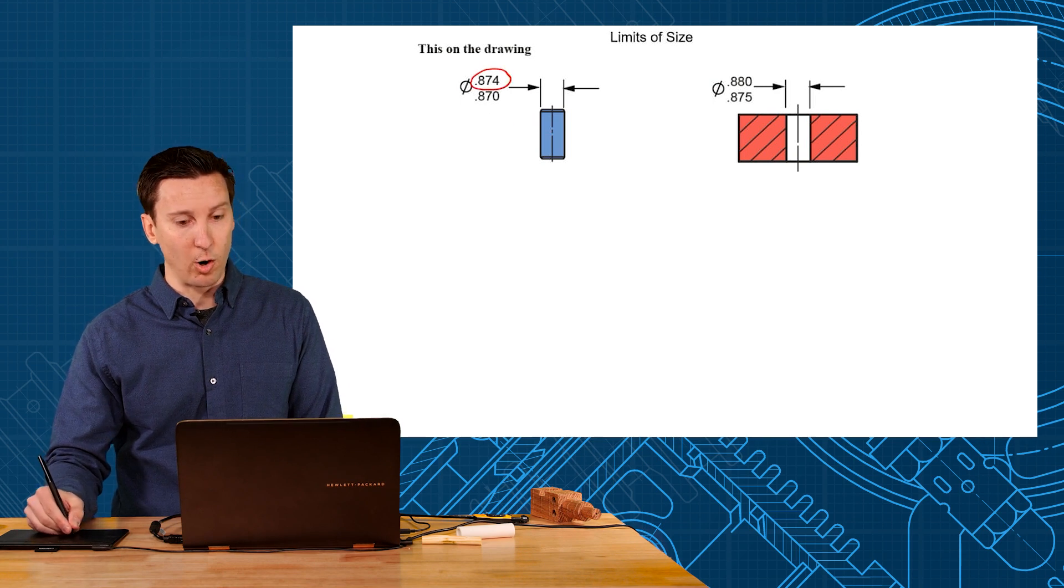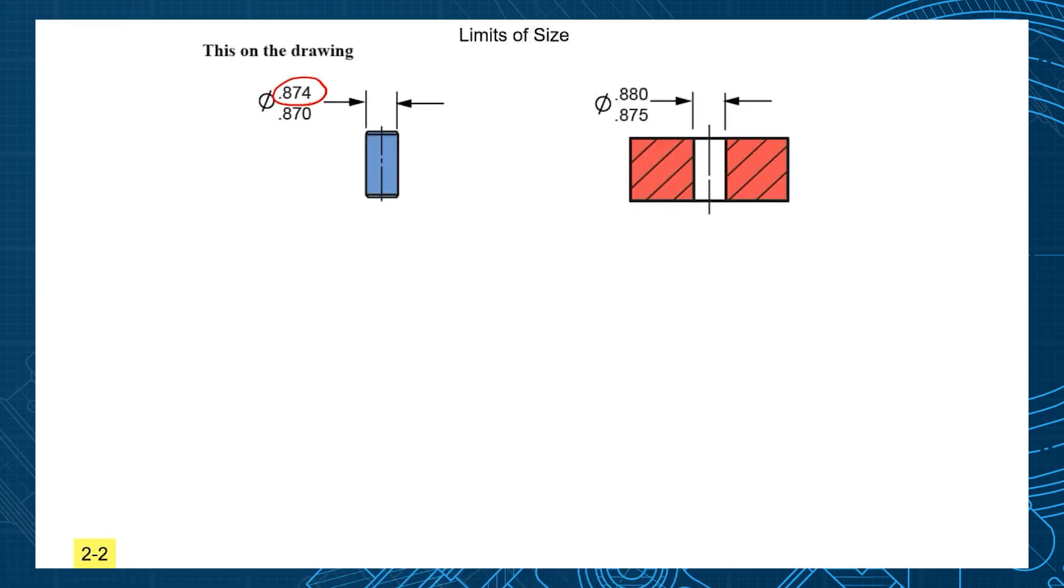The .874 - and what do we call that in geometric tolerancing? The MMC, maximum material condition. And then we're looking at the .875 smallest hole, and what do we call that in geometric tolerancing? Also the MMC. So MMC is smallest hole, biggest pin, and you can see there's a thousandth of an inch clearance.